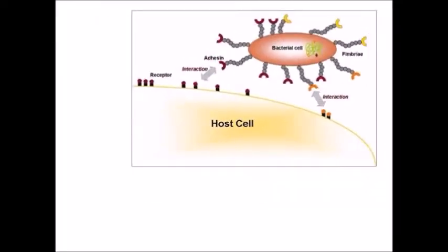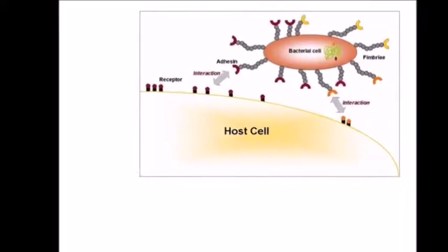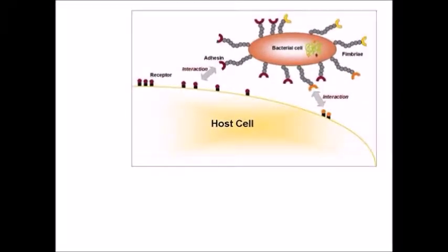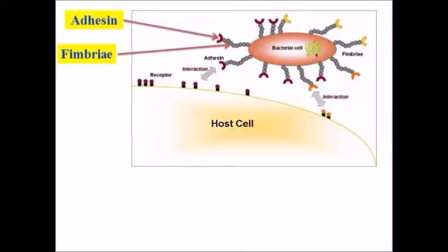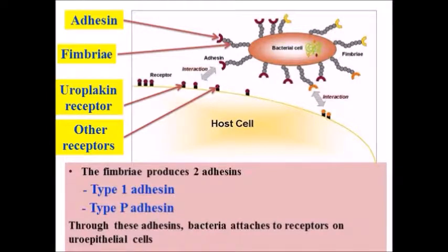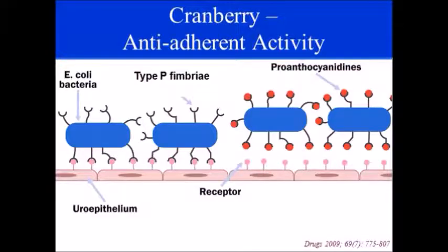Looking at this diagram, you can see the host cell and the bacterial cell. The bacterial cell has a lot of fimbria on its body, along with fimbria adhesions. With the help of these adhesions, which have a gum-like consistency, bacterial cells are able to attach themselves to uroplakin or other receptors of the host cell. There are two types of fimbria adhesions: type 1 and type P, through which the bacteria attaches to receptors on the uroepithelial wall.